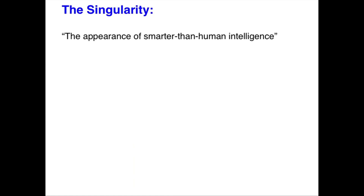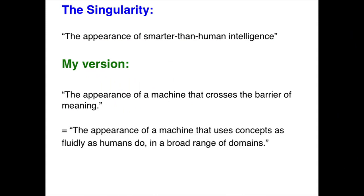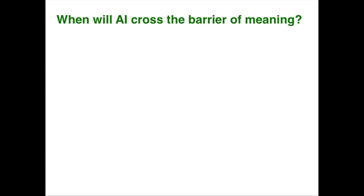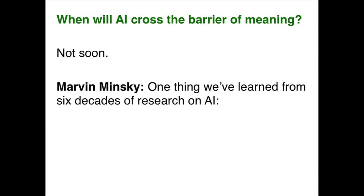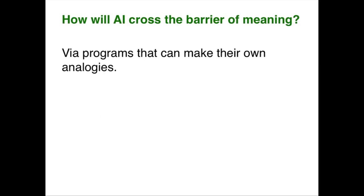The singularity has been called the appearance of smarter-than-human intelligence, but my version is a little different. I would call what I'm looking for the appearance of a machine that crosses the barrier of meaning — that uses concepts as fluidly as humans do in a broad range of domains. When will AI cross the barrier of meaning? I don't think it's going to be very soon. Marvin Minsky, pioneer of AI, said that one thing we've learned from six decades of research is that easy things are hard — things easy for humans, like fluid concepts, are the hardest things for computers. Eventually, a key component will be programs that make their own analogies.